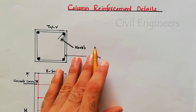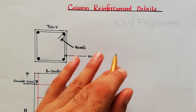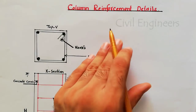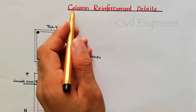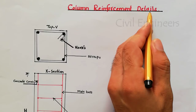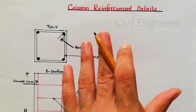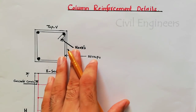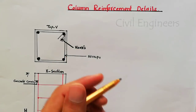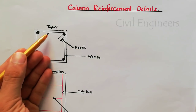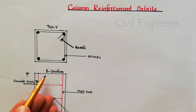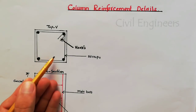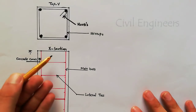Assalamualaikum friends, welcome back to Civil Engineers YouTube channel. In this video lecture I am going to discuss column reinforcement details. This is the column top view and this is the cross section — this is the cross section for the column.